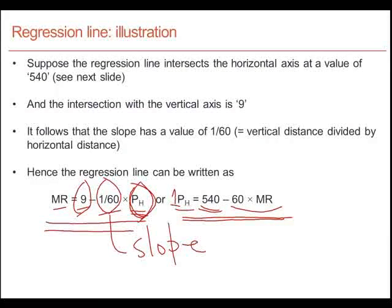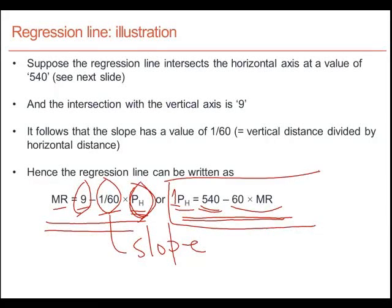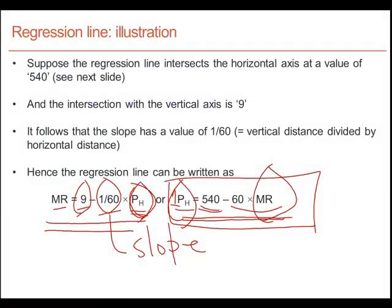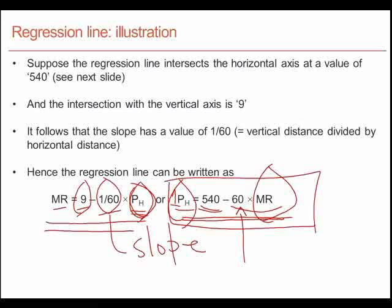This simple model developed on the basis of observed data tells us that every time we change the mortgage rate by one point, the price index of housing will change by 60 times that mortgage rate change. We have an economic model with empirical content based on actual observation of data. We have been able to scientifically develop a model which specifies a precise empirical relationship between two economic variables.